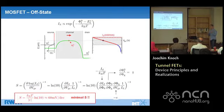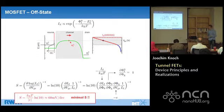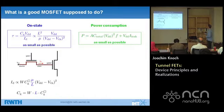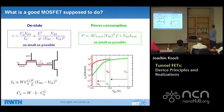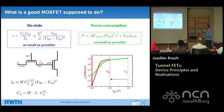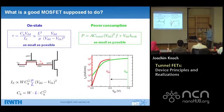The inverse subthreshold slope is 60 millivolts per decade at room temperature. The interesting thing is that you cannot do anything about it — it doesn't depend on material properties or device geometry. Any device relying on modulation of carrier injection from a thermally broadened Fermi function will show this 60 mV/decade limit. To lower power consumption you can either lower supply voltage and lose on-state performance, or shift the threshold voltage and get exponentially increasing off-state leakage. What you really want is a device with steeper than 60 mV/decade — and that's where the tunnel FET comes in.